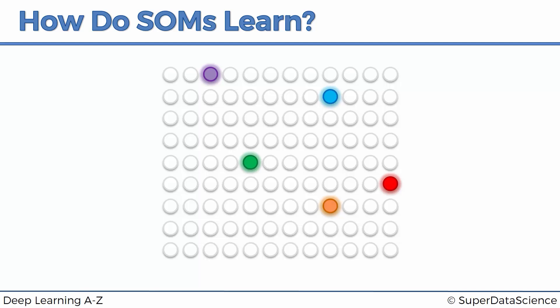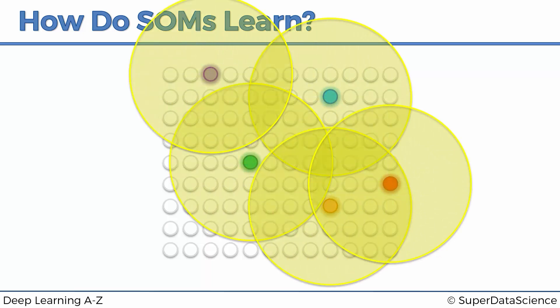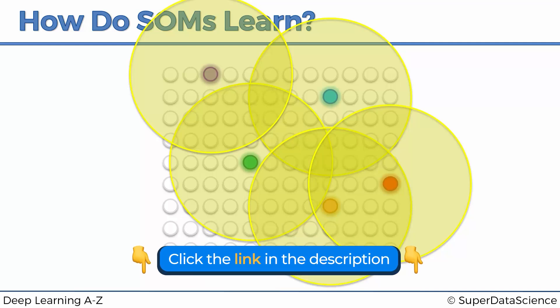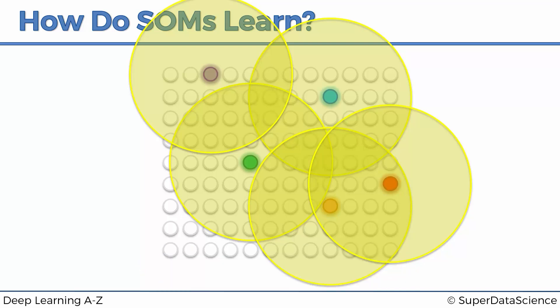As we discussed, these BMUs are going to be updated to be even closer to the rows that they matched up to, and then each one of these BMUs is going to be assigned an area around it. That area is going to be calculated through a radius, and this is what it looks like. Some values don't fall under the radius here, but that usually doesn't happen in self-organizing maps — this is just our visual example.